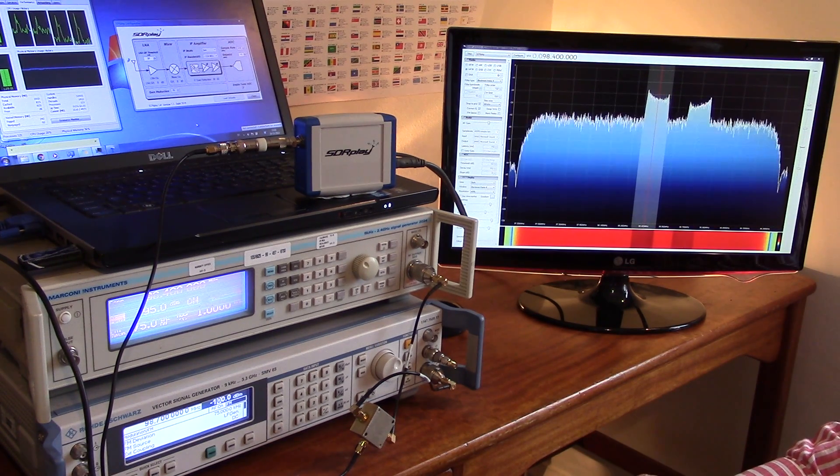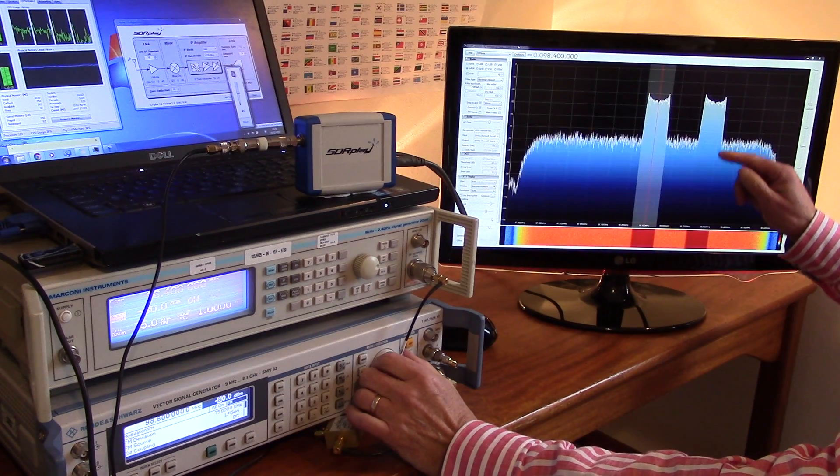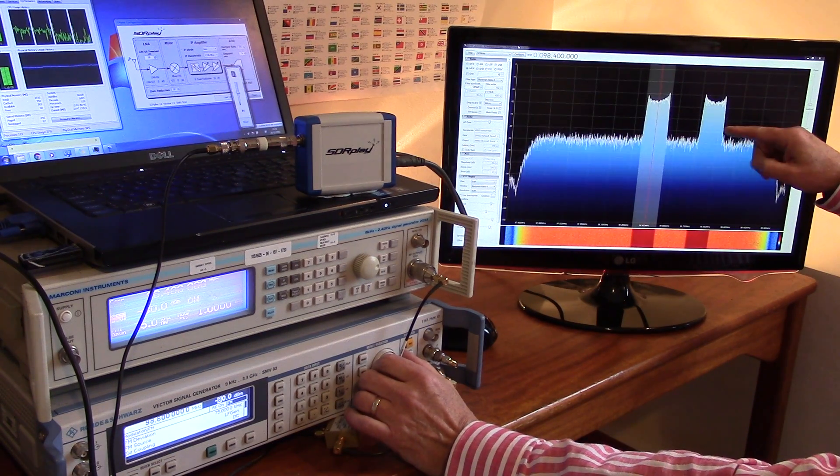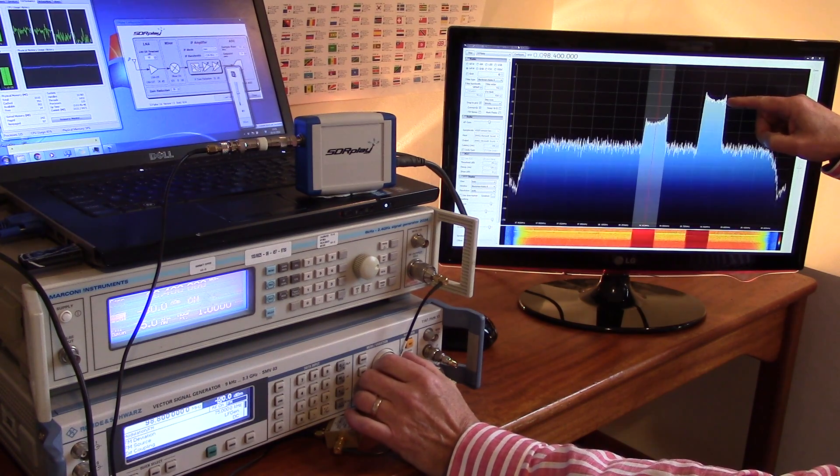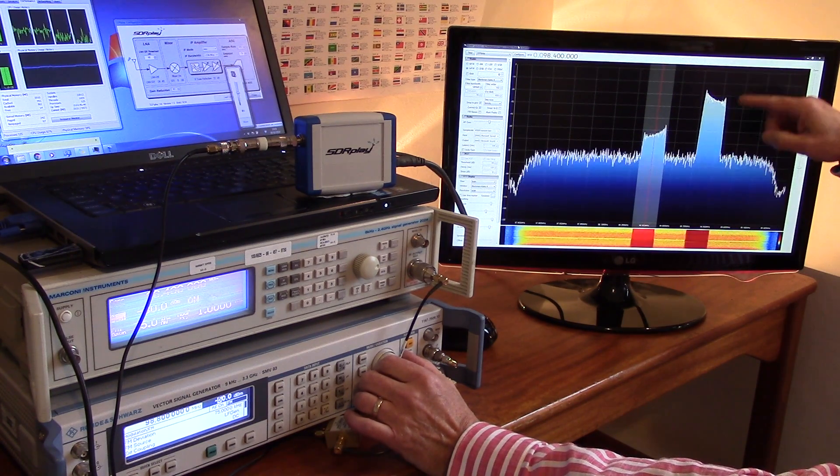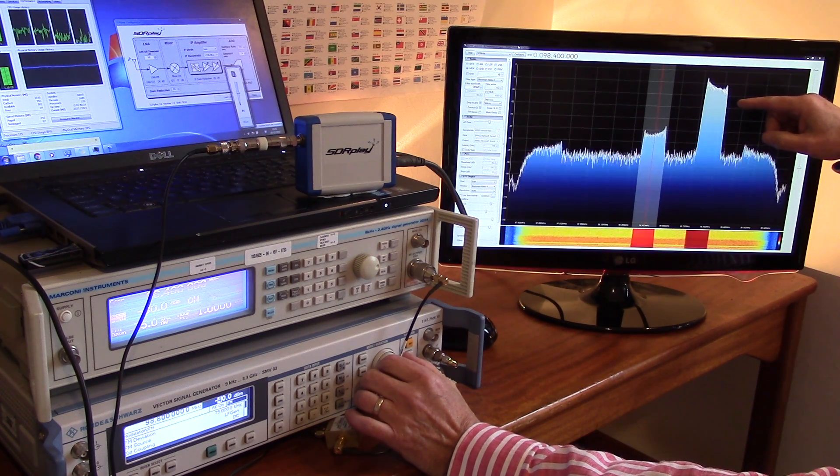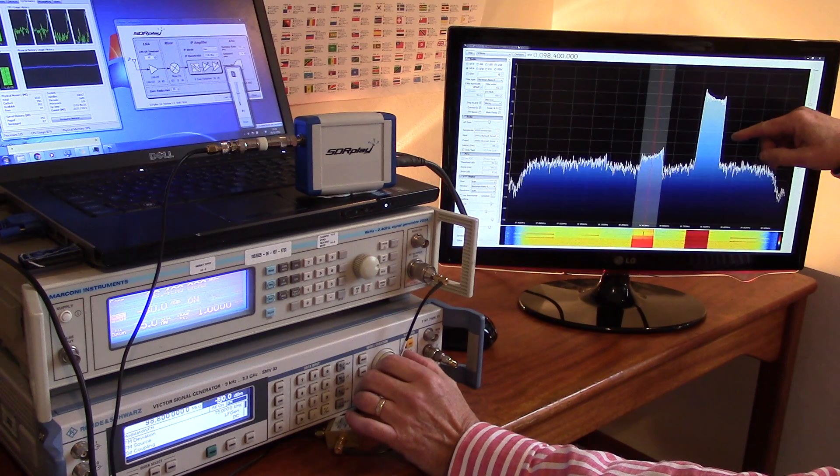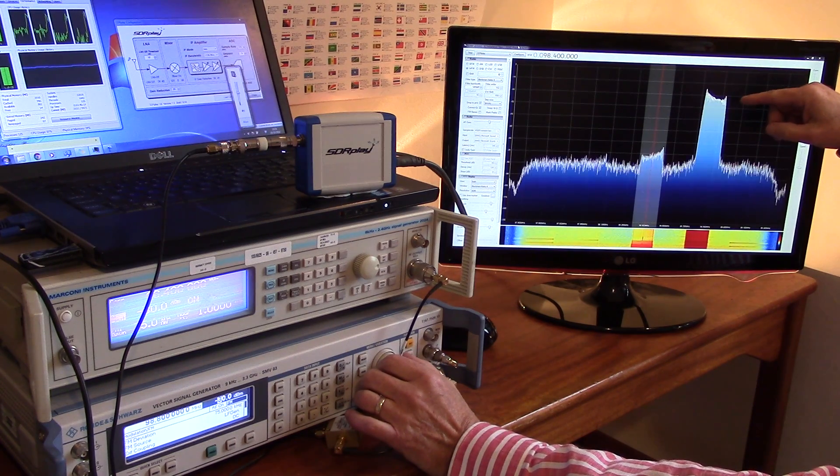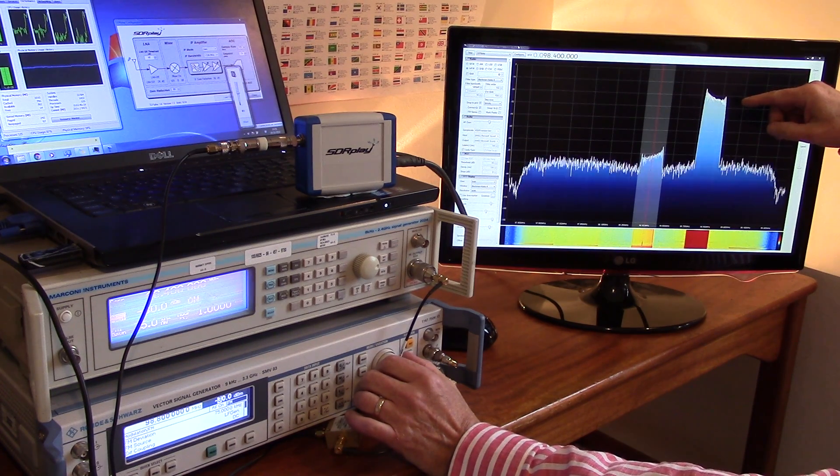We're now going to wind up the level of the unwanted signal on the right to see how far we can go. Each one of these graduations is 10 dB. There we are, 50 dB.